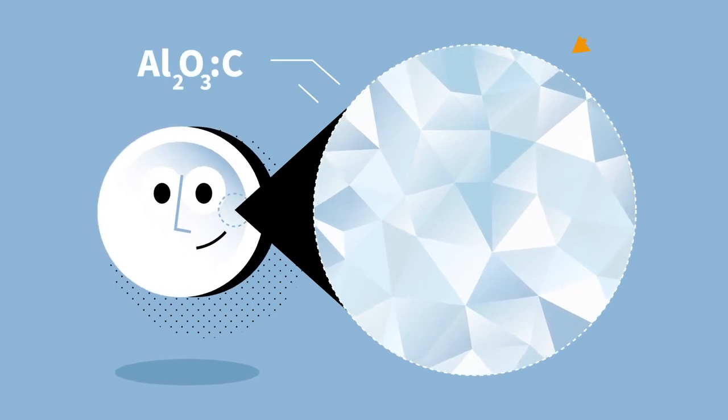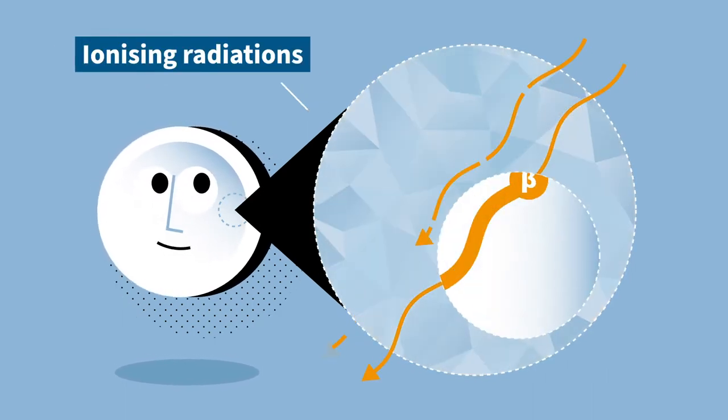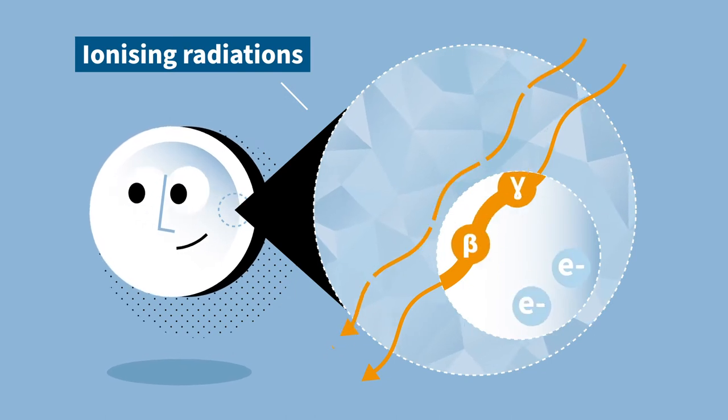Todd is made out of aluminum oxide, doped with carbon. Electrons are produced when radiation exposure crosses the crystal. They're trapped by crystal defects.